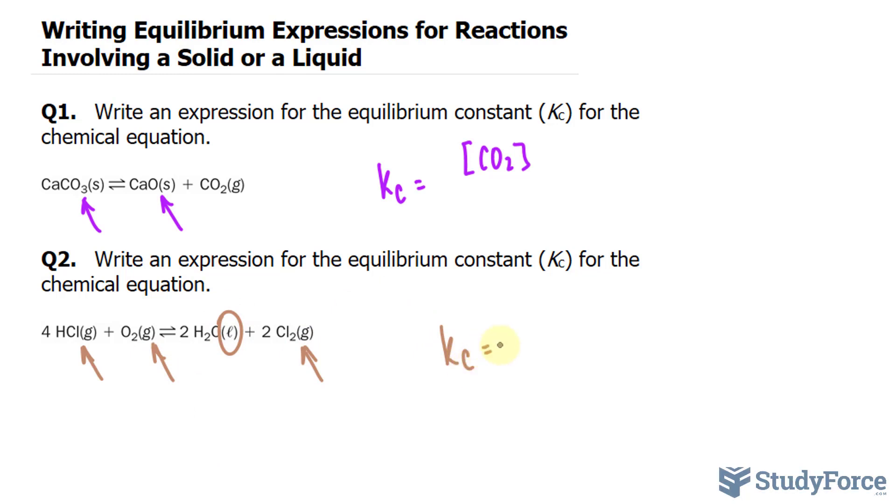So Kc is equal to the concentration of Cl2 raised to the power of 2, given the coefficient, over HCl, its concentration raised to the power of 4, and the concentration of oxygen raised to the power of 1. What you see here is the expression for Kc. And there you have it.